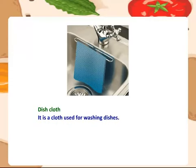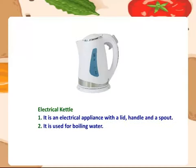Dish cloth — it is a cloth used for washing dishes. Electric kettle — it is an electrical appliance with a lid, handle and a spout. It is used for boiling water.